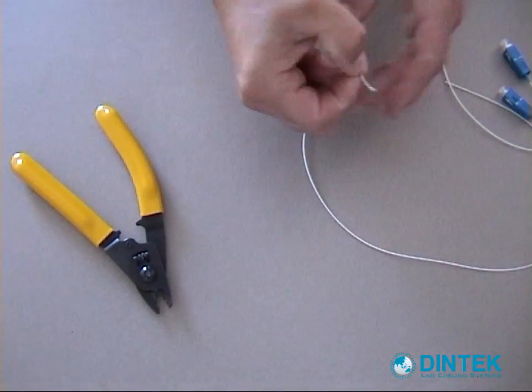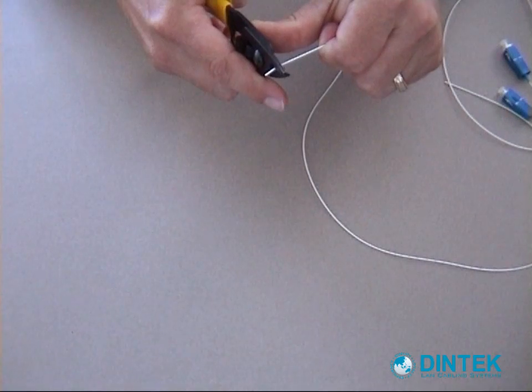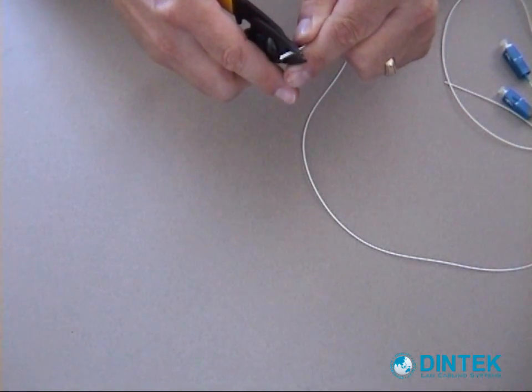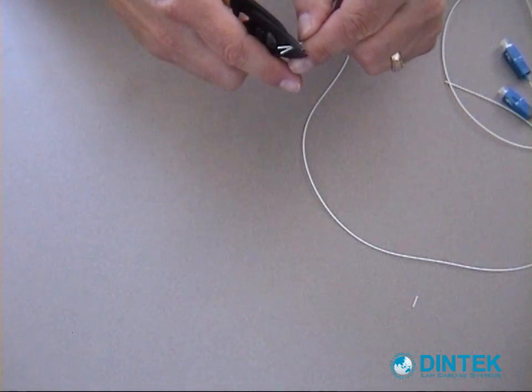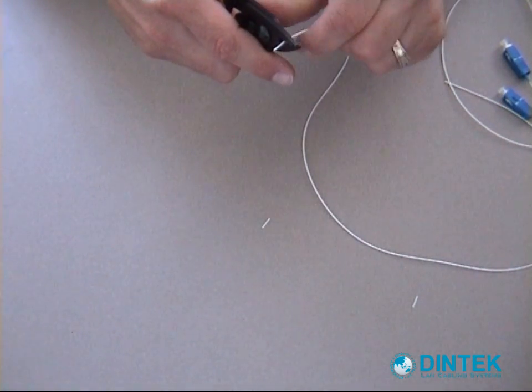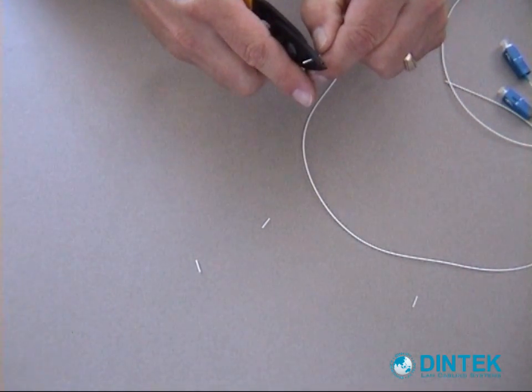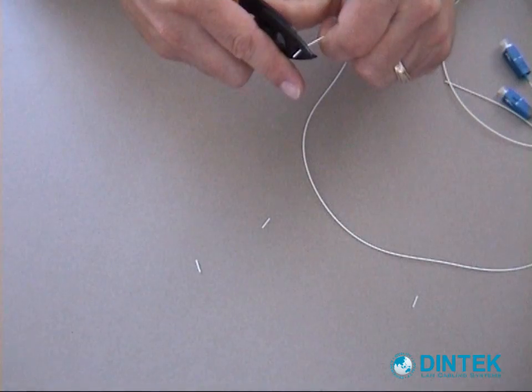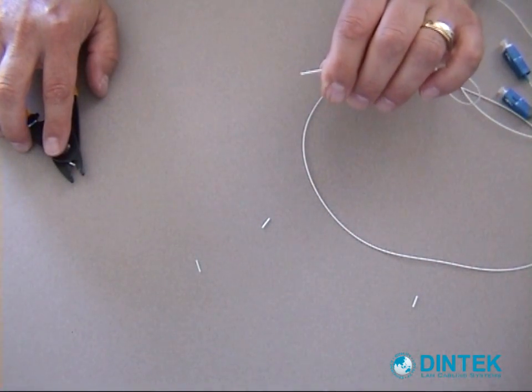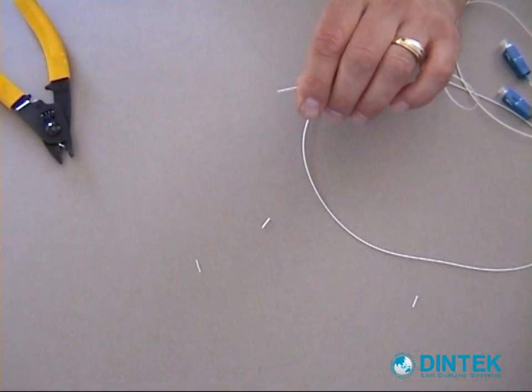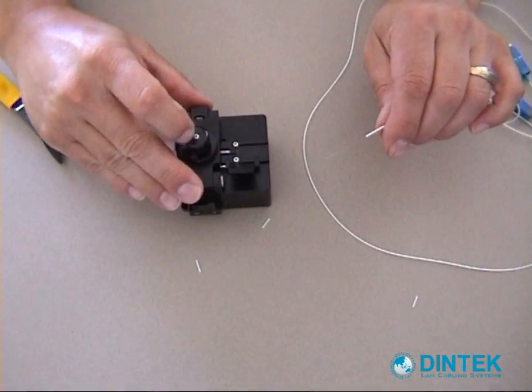So firstly we're going to strip off one of our fibers. Taking off small bits. Don't need to bite the stripping tool all the way down, just so it cuts into the coating. We don't want to come too far down. We've taken off about 40 mils here. We'll get our cleaving machine. Open it up.